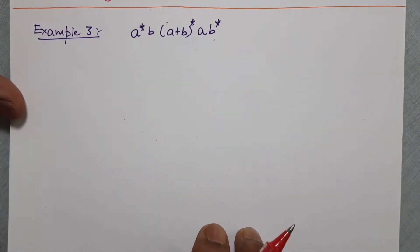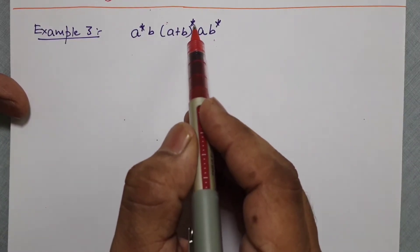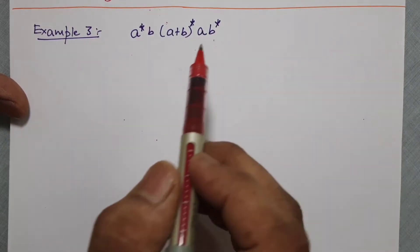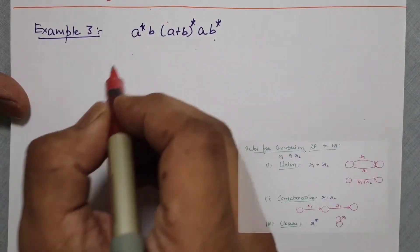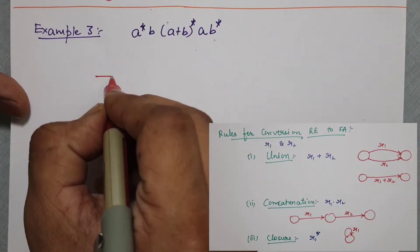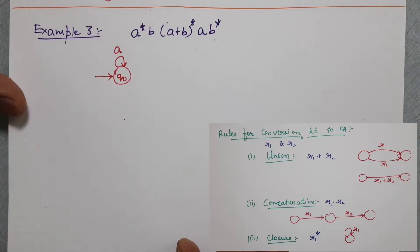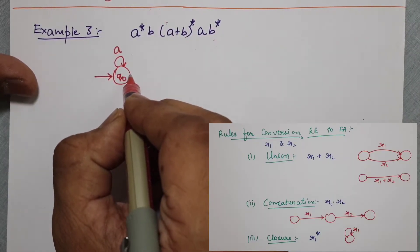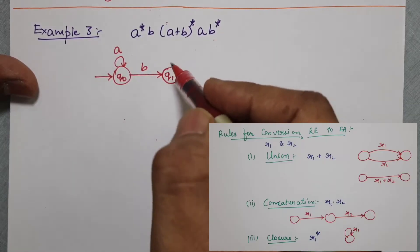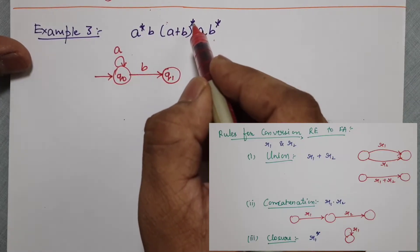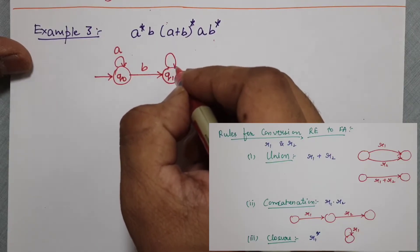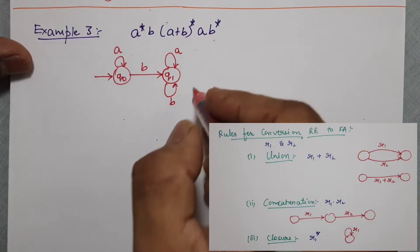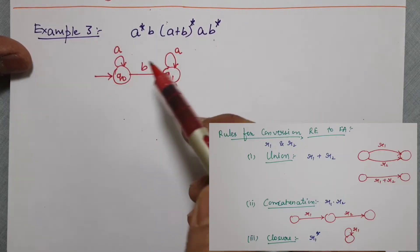Let us see one more example. Here is another example: a* b (a+b)* ab*. Applying the same approach, first we have a*, so the starting state will have a self loop of a, then b should take me to another state. Then (a+b)* — so I will have a and b as a self loop — just as we have seen in the previous example.